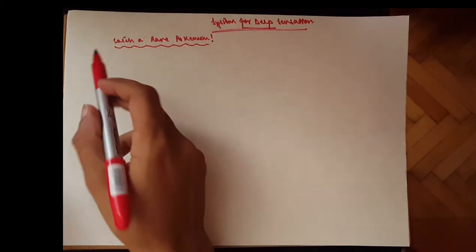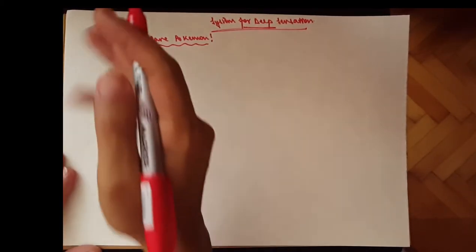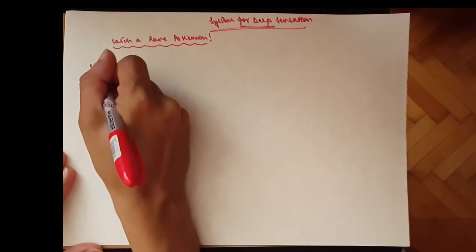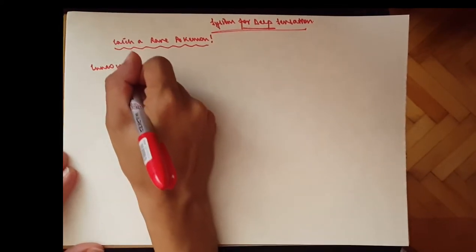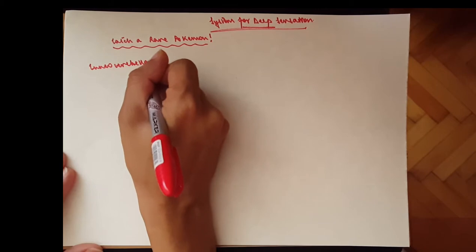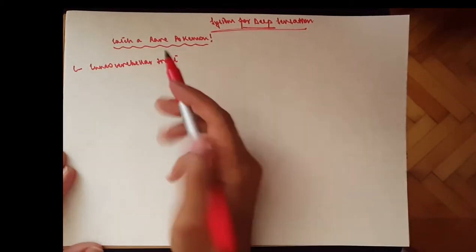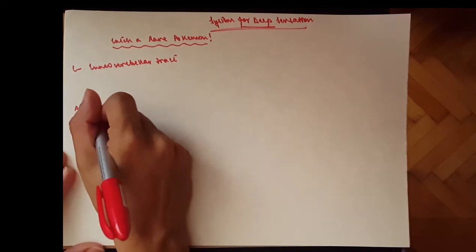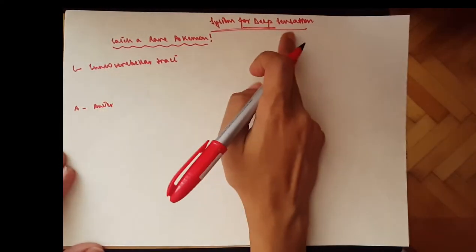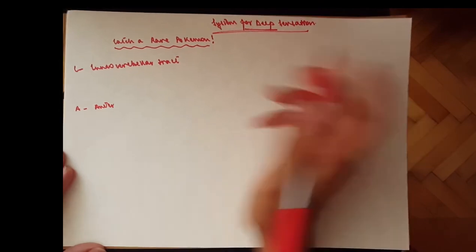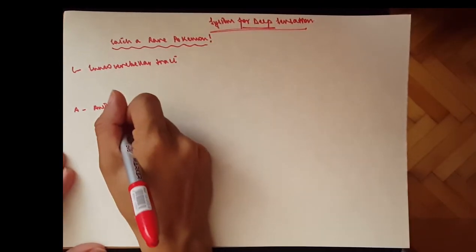Okay, so catch would be for our tract, that would be cuneocerebellar tract. A would be for another tract, the anterior. Deep sensation is proprioception, which is to do with the cerebellum, so this one would be the anterior spinocerebellar tract.